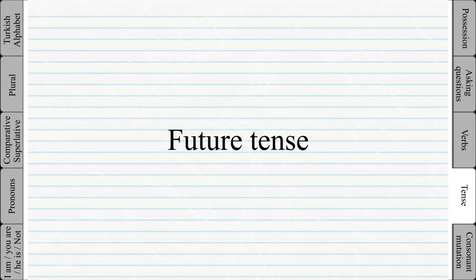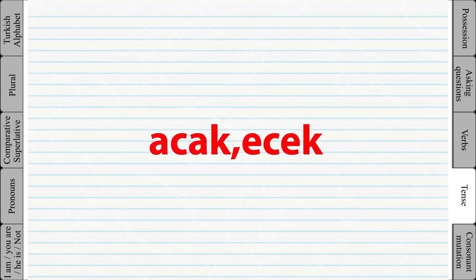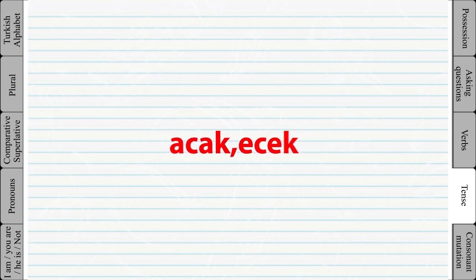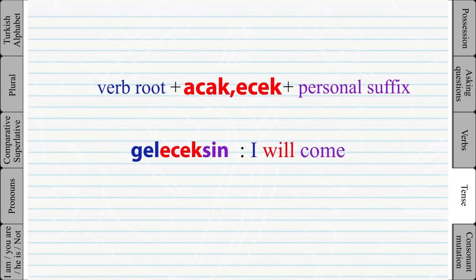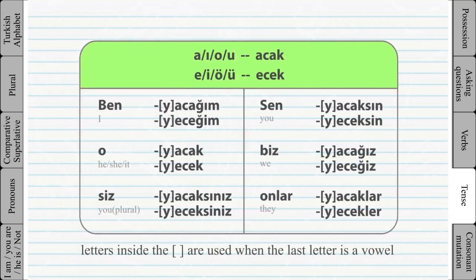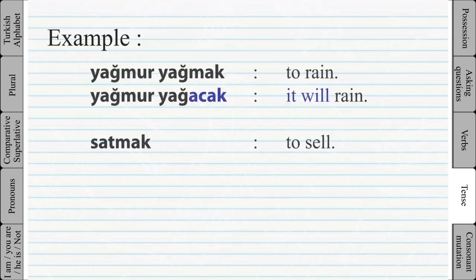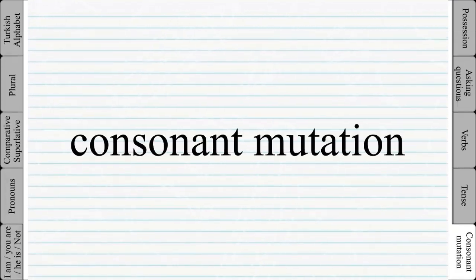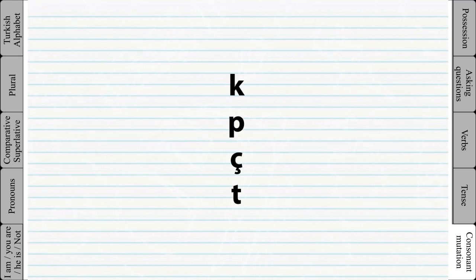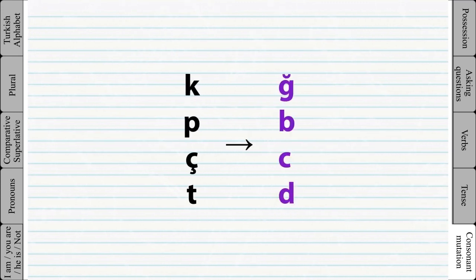Future tense: by now you should have an idea how Turkish grammar works — how by adding a suffix you can change the tense of a verb. The future tense is no exception; the suffix for the future tense is -acak/-ecek. Now is a good time to talk about consonant mutation: when a vowel suffix is added to a word ending with one of four letters, the last letter of the word will change into another letter.